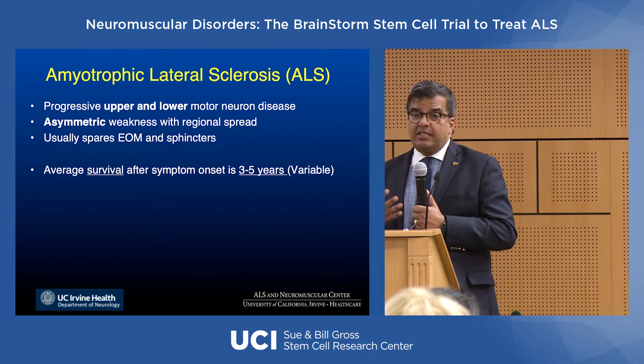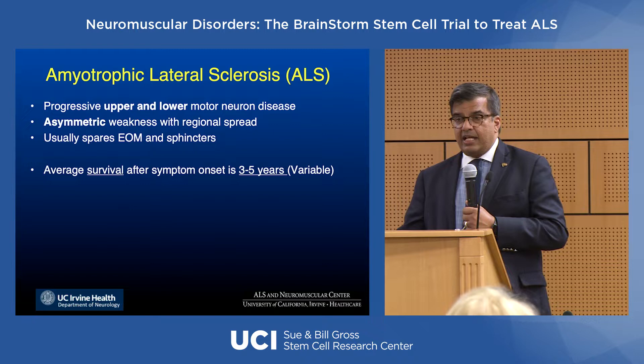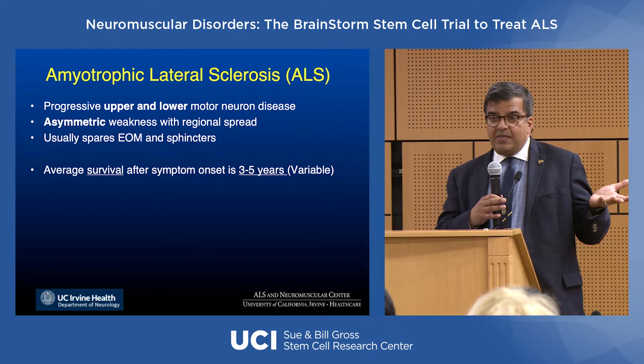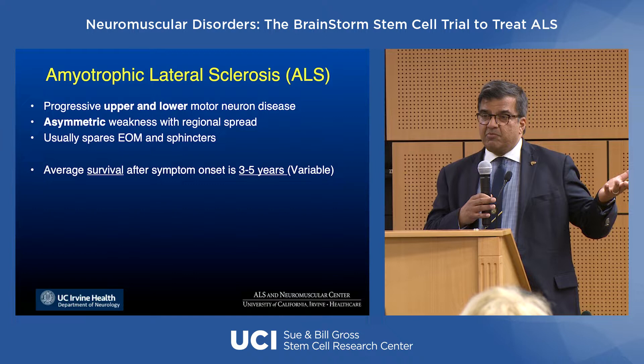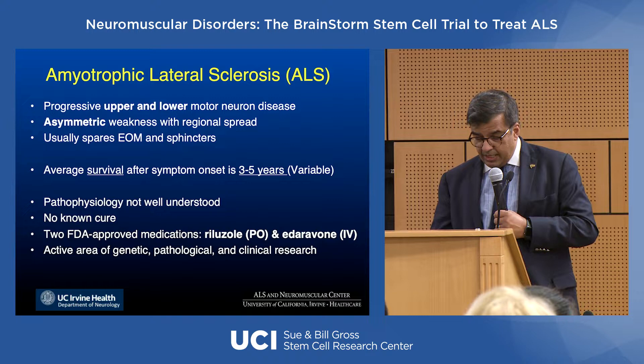The average survival in our clinic is about three years from the time patients come to see us and get diagnosed. There are tremendous variations, however — some patients crash and burn in nine months. I've had patients who came to see me with a family history where most members lived 11 months, and indeed that patient was gone 11 months later. But I've also had patients who have lived 23 years, so there is tremendous variation in this disease.